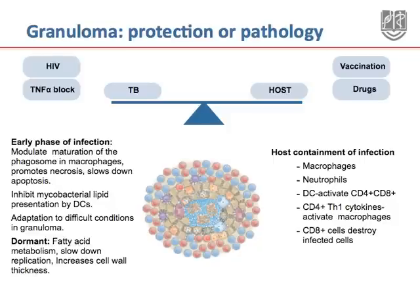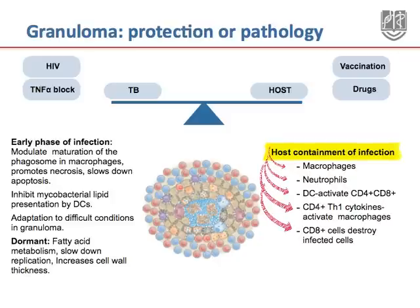Does the granuloma contribute to protection or pathology? The granuloma is a balance between host containment and disease progression. On one hand, the host induces a robust immune response by deploying a large number of cells, including macrophages, neutrophils, dendritic cells, and T cells. However, on the other hand, the bacterium has developed mechanisms to withstand difficult conditions in the granuloma, such as low oxygen and lack of nutrients.